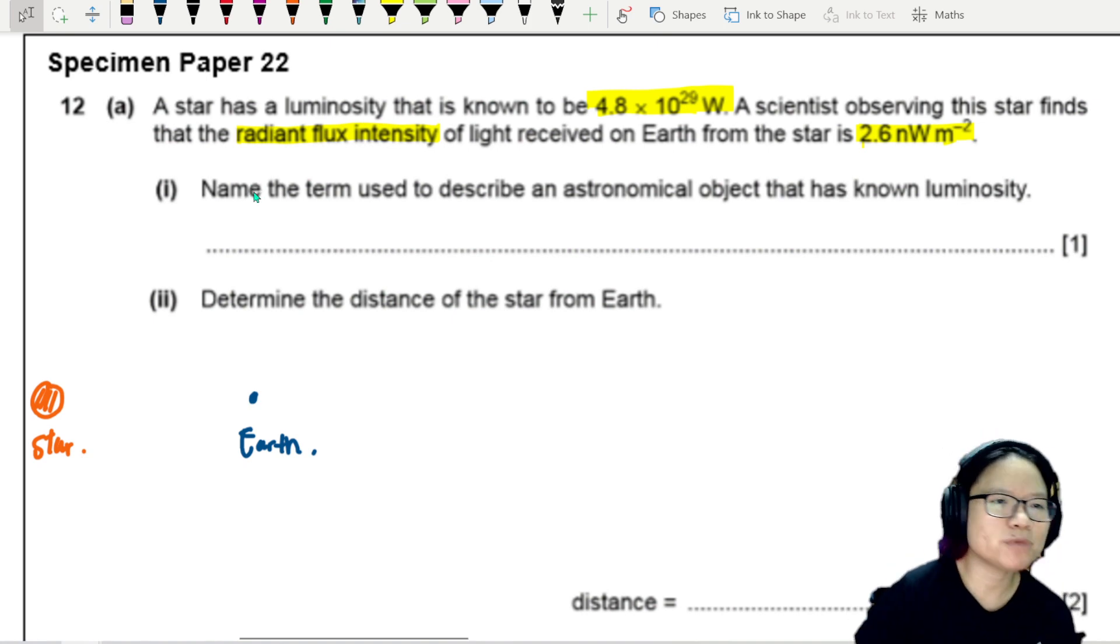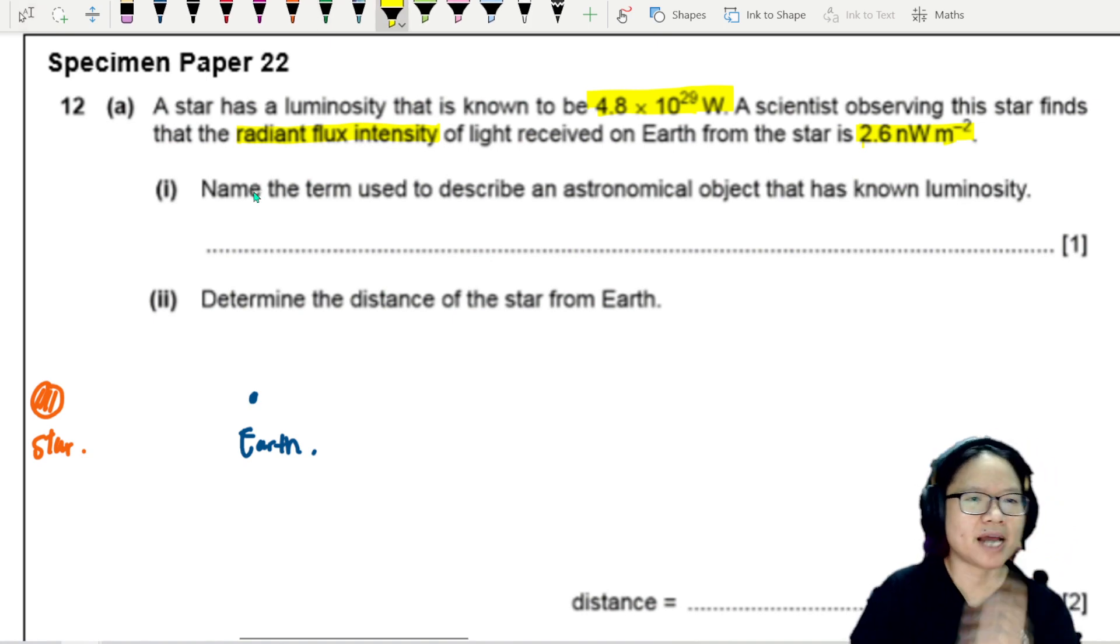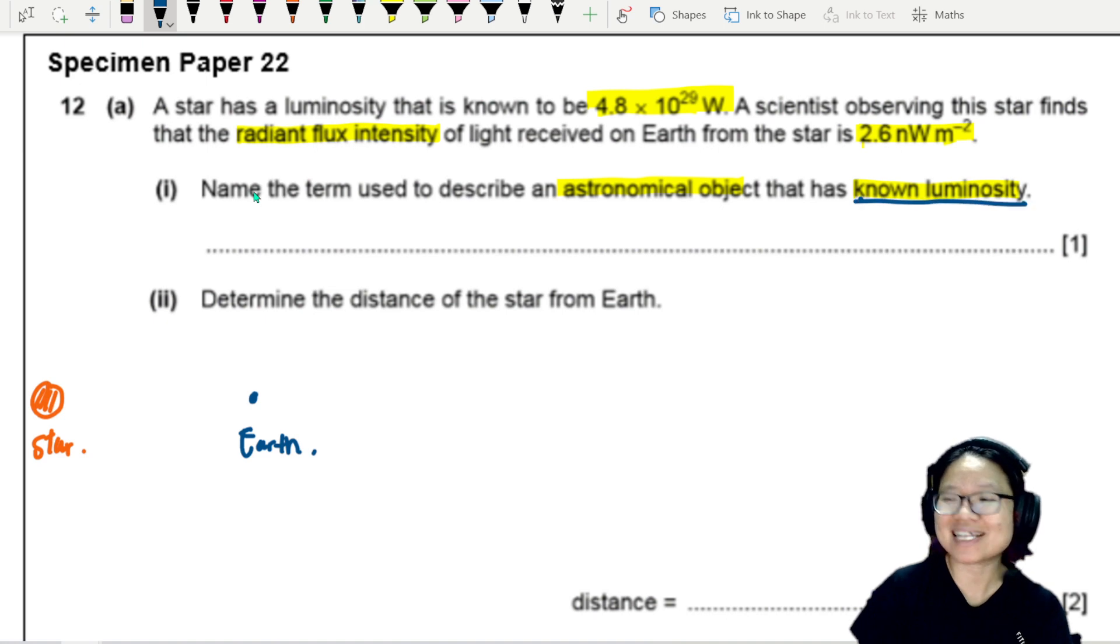Name the term used to describe an astronomical object with known luminosity. So this known luminosity is a big hint here. This is our standard candles. They're not asking for the type or an example of standard candles, just asking for the term, so standard candle.